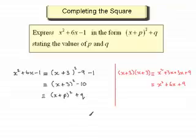Now, because we were asked to state the values of p and q, I can say that p equals—we can compare this with what we've got here. You can see that this is plus p and this is plus 3. So p must have been 3.